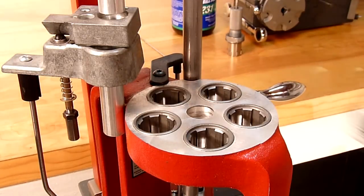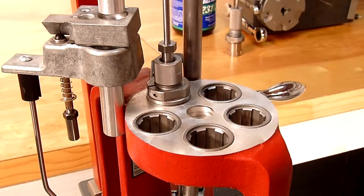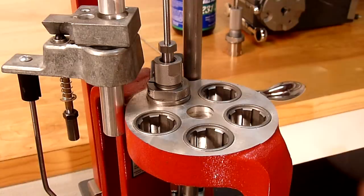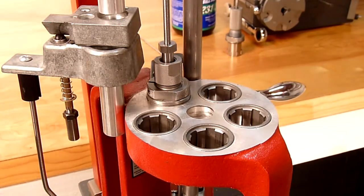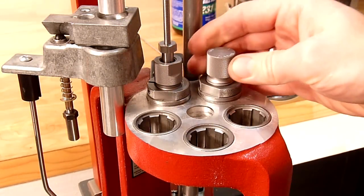We're going to take our sizing and depriming die and drop that into station number 1. With an eighth of a turn, we've secured that particular die. After sizing and depriming comes our expander.